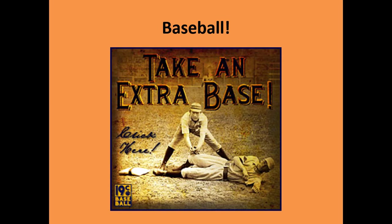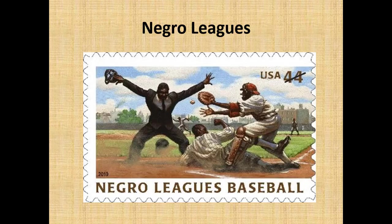Baseball was very popular, but the big leagues were just for white players. If you were black, you played in the Negro Leagues — and very famous Hall of Fame players like Satchel Paige and Jackie Robinson played there. Robinson would break the color line in the 1940s as the first African American in the big leagues with the Brooklyn Dodgers. Football was popular at the college level but not close to baseball's national obsession.